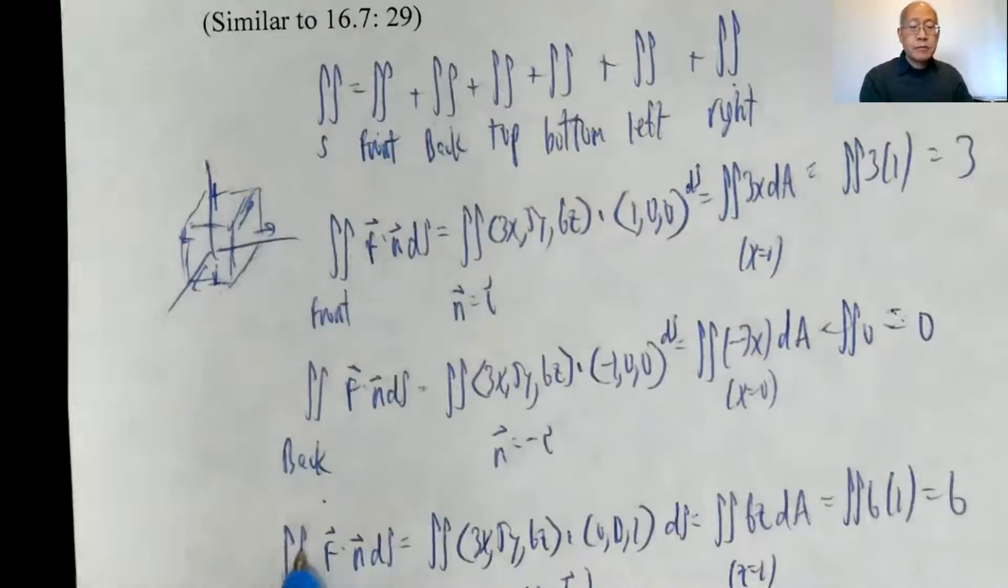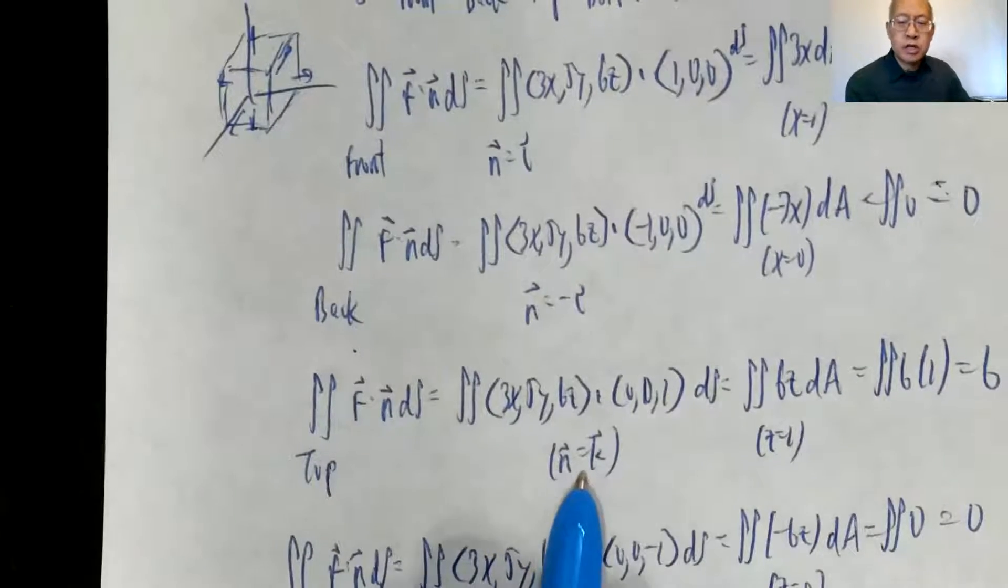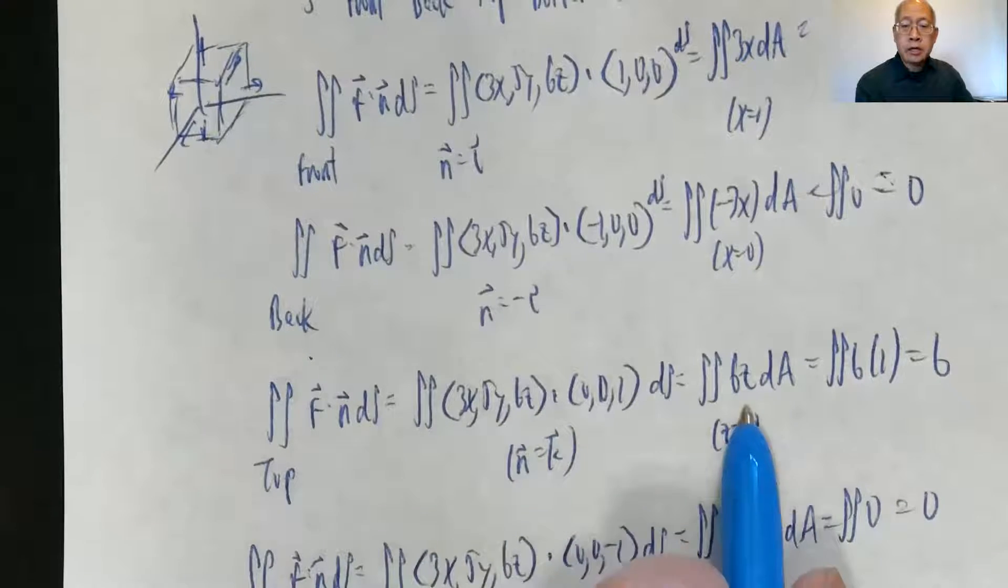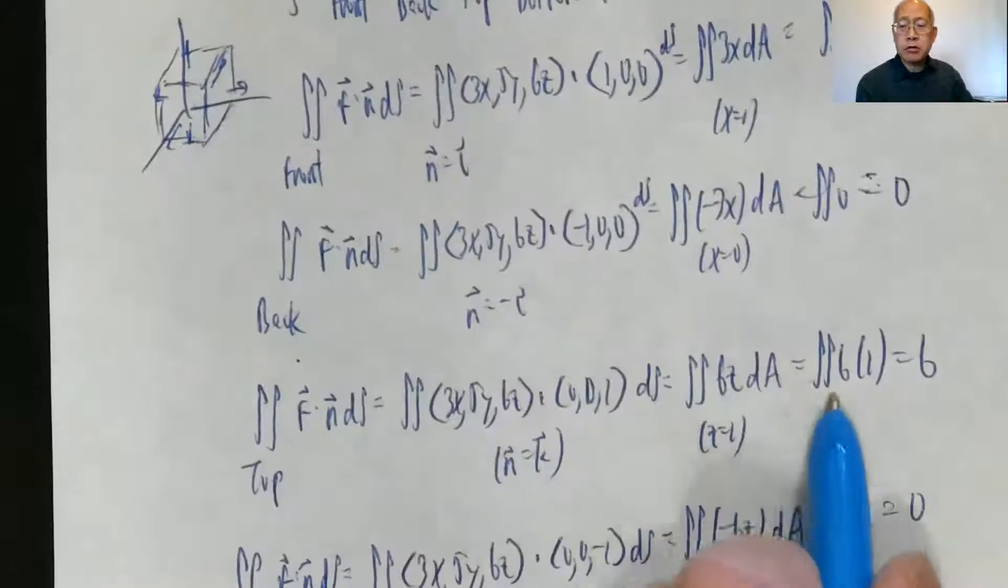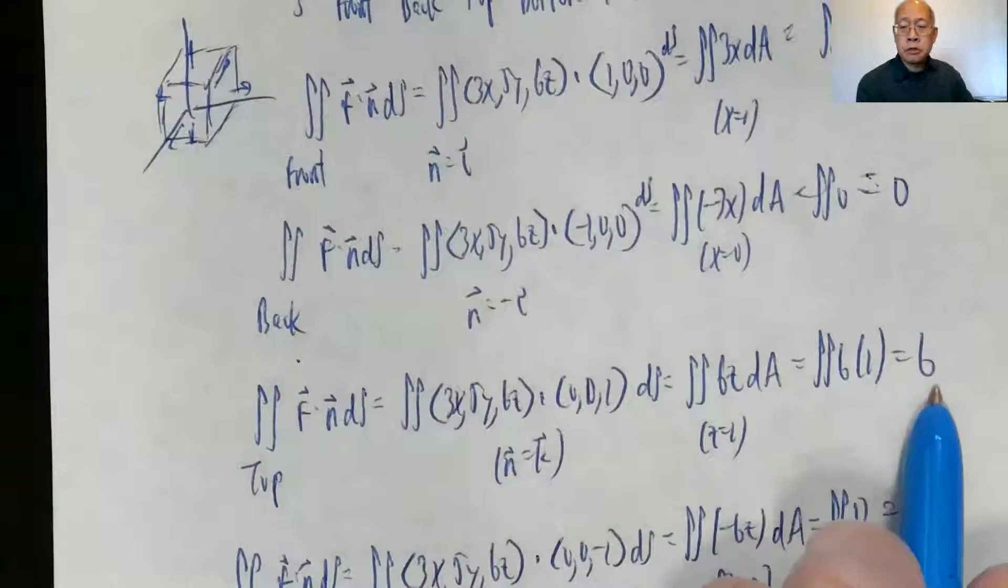Okay the top: F dot n ds, the unit normal at the top is k, which is (0, 0, 1). So F dot k is 6z, but z is equal to 1 at the top, so it's a double integral of 6 times dA, which is 1 by 1, so 6.